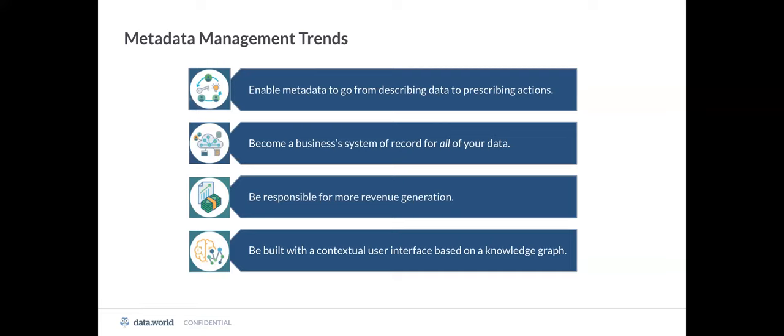Second, your data catalog will become your system of record — more than just relational metadata or schema metadata. It will become a catalog of all your data, including eventing, reporting, dashboards, logs, and click streams. It will become the first place anyone in the business goes when starting any project. Third, your catalog will live in your revenue stream. Many traditional metadata management solutions were intended mostly to keep your data orderly and secure — think GDPR and CCPA. While that's important, those tools were built to empower defense-oriented activities rather than offense-oriented ones like democratization and monetization.